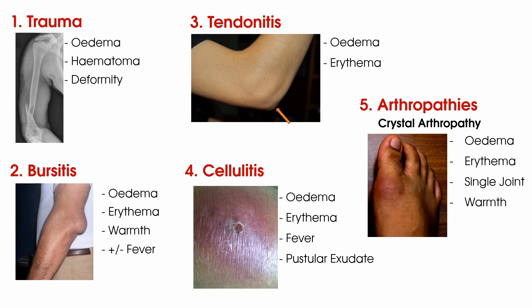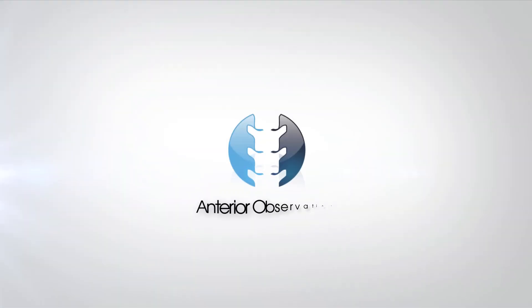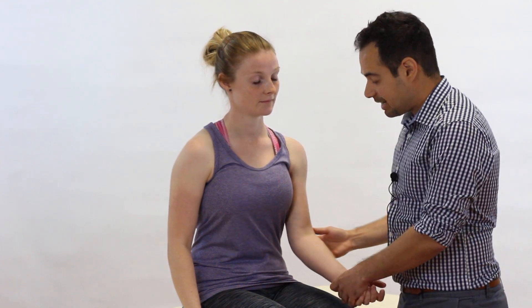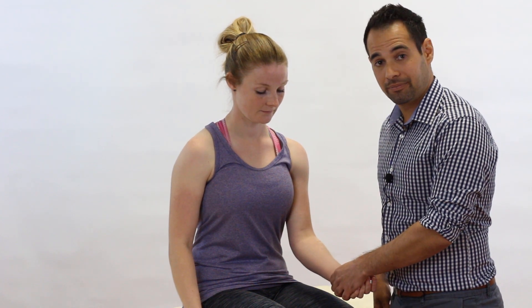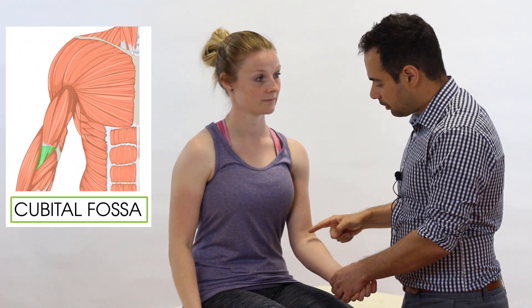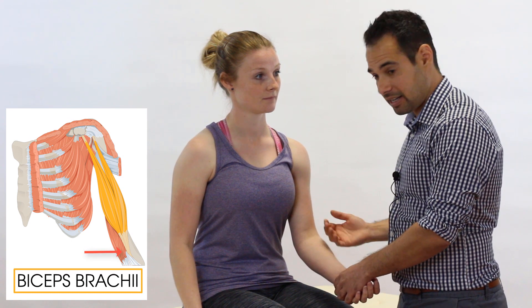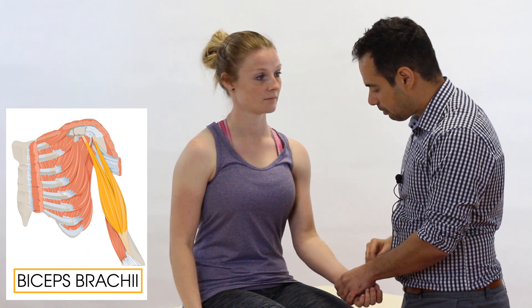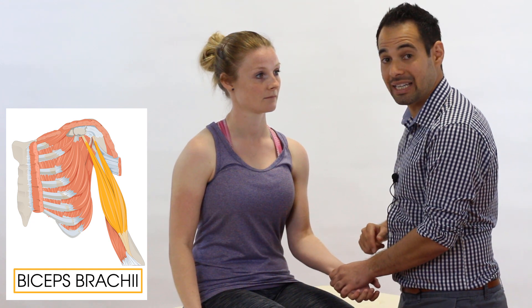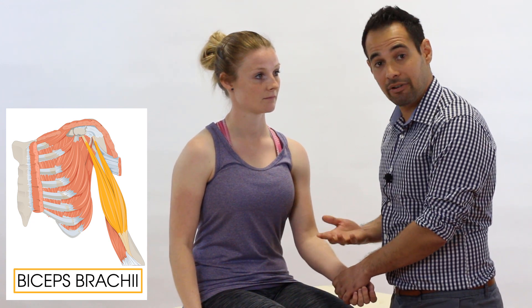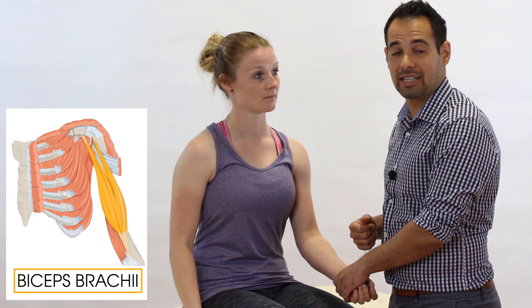So those are our inflammatory signs — let's get into the main video. We're going to start our observation of the patient's elbow with an anterior view. The first thing we're going to observe is the cubital fossa, in the centre of which sits the distal biceps tendon. Whilst you can't necessarily see the tendon at rest, you could ask your patient to flex their elbow against your resistance and you might just see it. If your patient has a very irritated distal biceps tendon you may find swelling or even redness before you do the resisted elbow flexion.